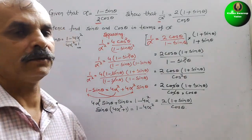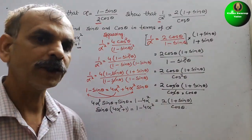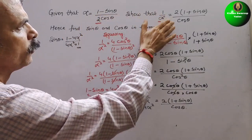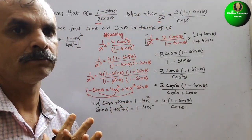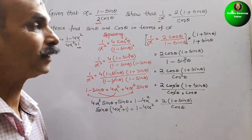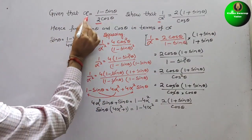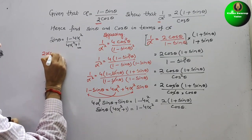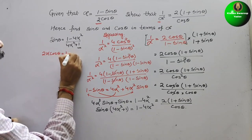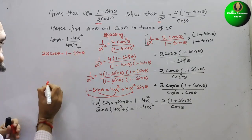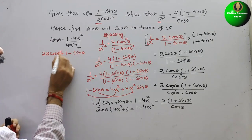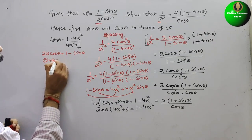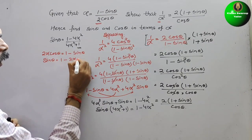Taking sin theta as common: sin theta times (4 alpha squared plus 1) equals 1 minus 4 alpha squared. Therefore sin theta equals (1 minus 4 alpha squared) divided by (4 alpha squared plus 1). For cos theta, from the original expression cross multiplying gives 2 alpha cos theta equal to 1 minus sin theta, so sin theta equals 1 minus 2 alpha cos theta.